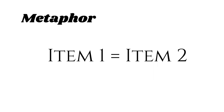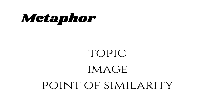A metaphor is a comparison between two items. It is composed of three parts: the topic, image, and point of similarity. The topic is the item being talked about. The image is the item that possesses a related characteristic that is vibrant, vivid, or stands out. That related characteristic between the topic and image is called the point of similarity.